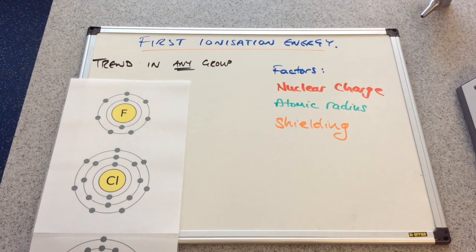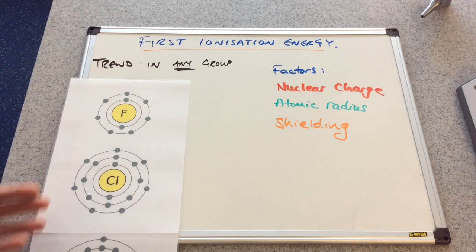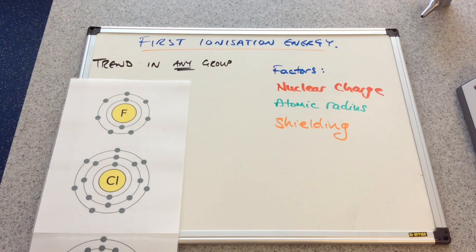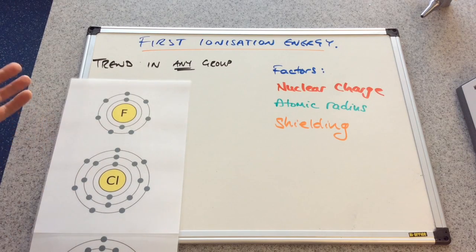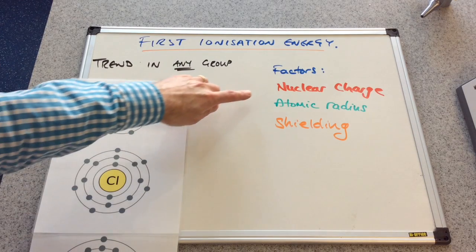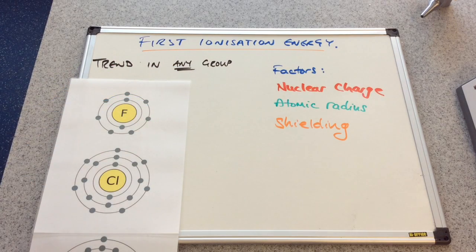We'll start by looking at the trends in a group — and I've underlined the word 'any' there, because what we're going to say is applicable to all groups in the periodic table. I'm going to use Group 7 to demonstrate it. Any answer to do with ionisation energy must include these factors — that's what the examiner is going to be looking for. Then we just pull it together at the end and say whether the energy would be greater or less as a result.